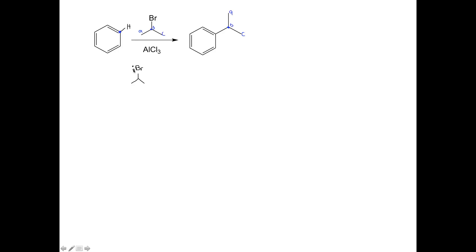So here is my initial alkyl halide, and I'm drawing in the lone pairs on the bromine. And the first step of the reaction is to generate our E+. And what happens is the bromine, electrons on the bromine, will attack aluminum. Aluminum is a Lewis acid. It wants to make a new bond, and that's exactly what happens.